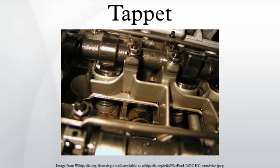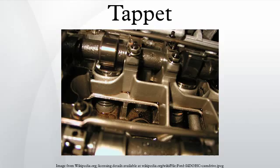In an overhead valve engine, this tappet is fitted low down in the engine block. From there it drives a long thin pushrod up to the top of the engine, above the cylinder head. Here the rockers, arranged on a rocker shaft beneath the rocker cover, reverse the direction of the valve movement to press the valves downwards to open them.